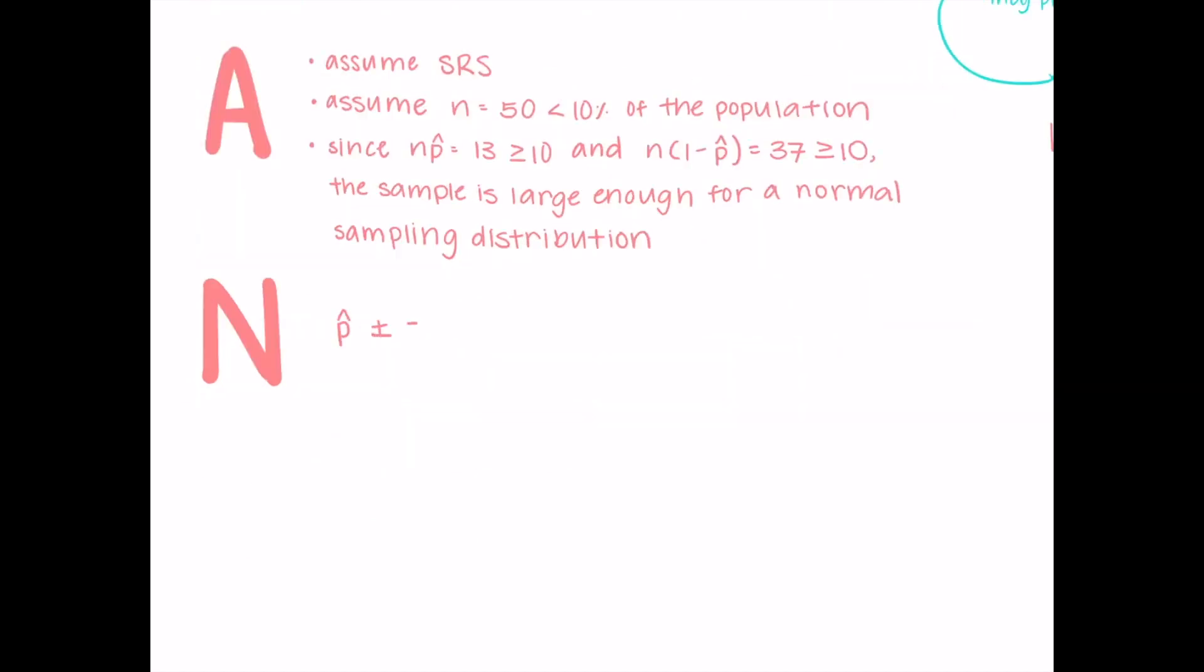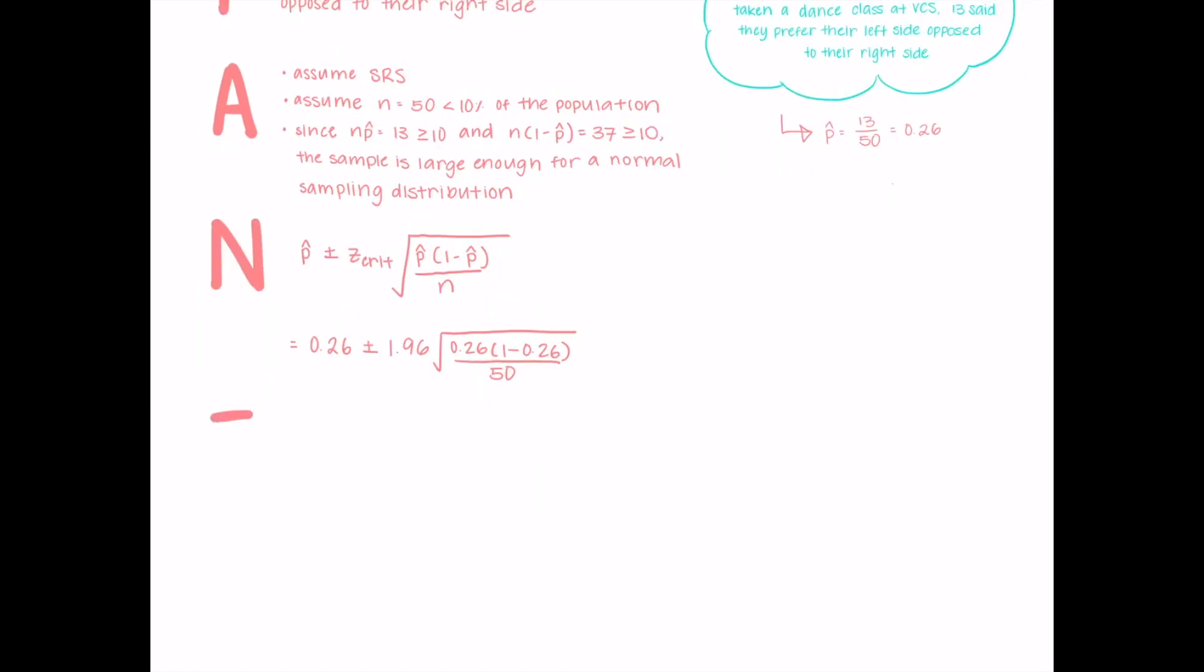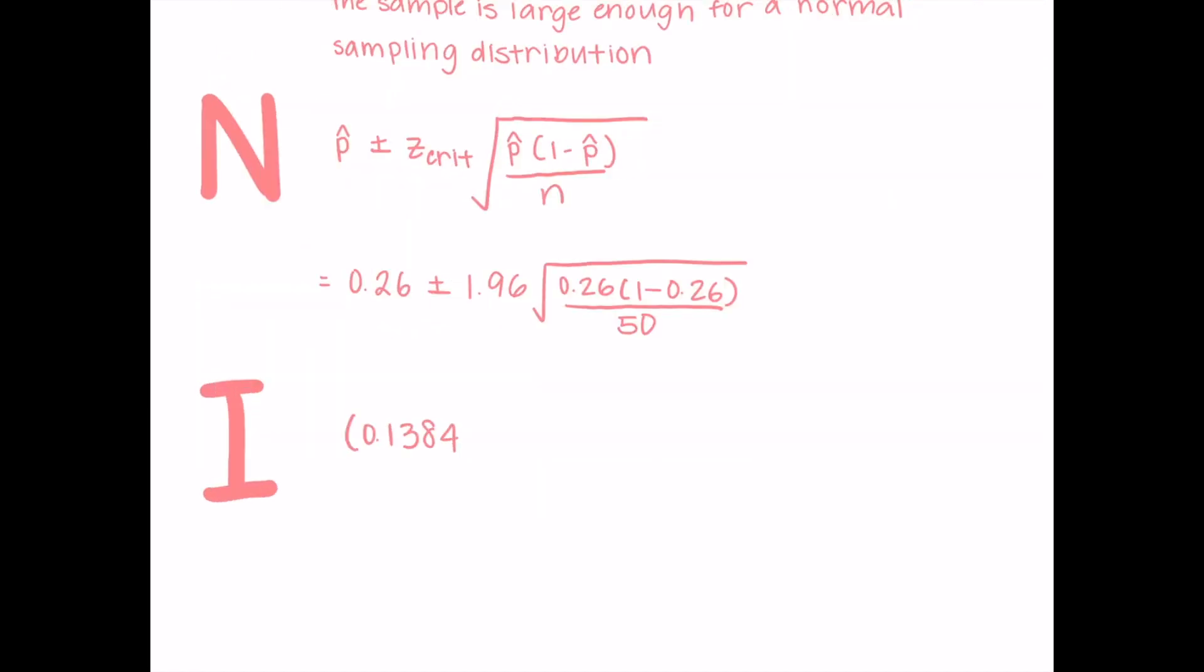We use the same formula to construct a confidence interval, which is P hat plus or minus Z crit times the square root of P hat times 1 minus P hat over n. And plugging in the numbers, we get an interval from 0.1384 to 0.3816.